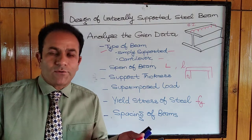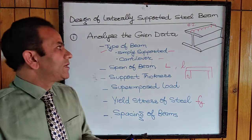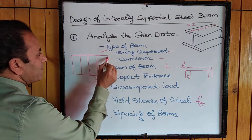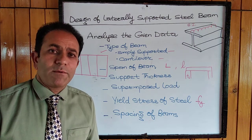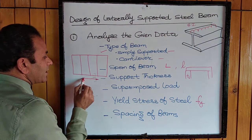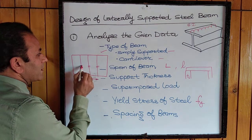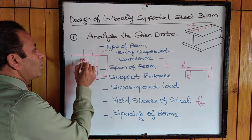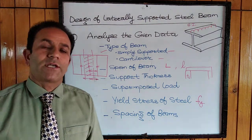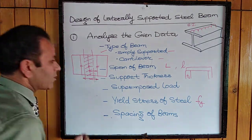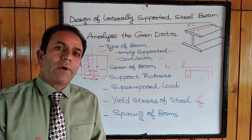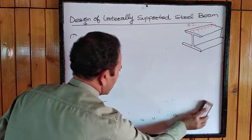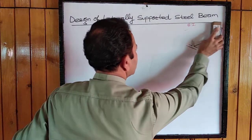Sometimes a plan of a slab or room supported by steel beams may be provided. From this plan we calculate the center-to-center distance of the beams, which gives us the load sharing area for a particular beam. The spacing of beams is required to find the load on each beam. If some data is missing, we may assume it suitably — for example, if yield stress is not given, we assume it and proceed.